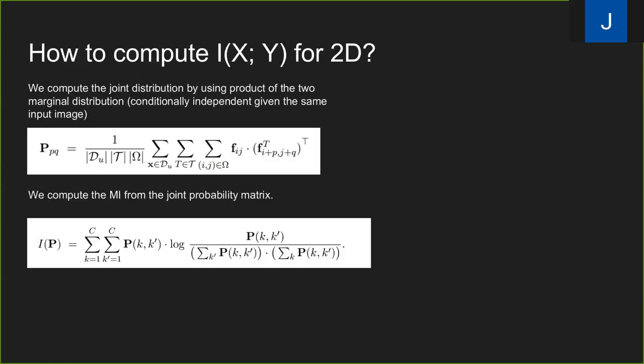How to calculate the mutual information? We use a convolution to construct the joint-count distribution and then use the joint distribution to maximize the mutual information. For the mathematical details, we invite the reader to check our paper.